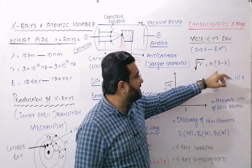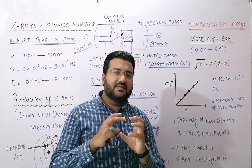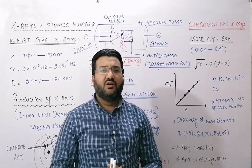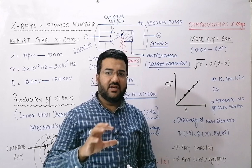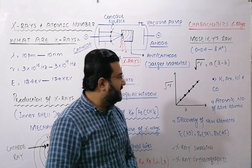The screening constant B shows that although protons exert a force of attraction on electrons, this force of attraction is reduced because of the shielding or screening effect of the intervening electrons — the other electrons present in the atom.